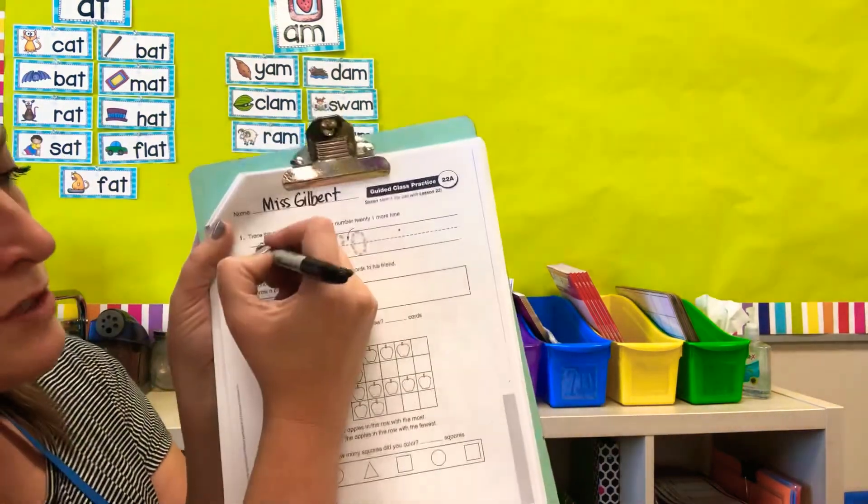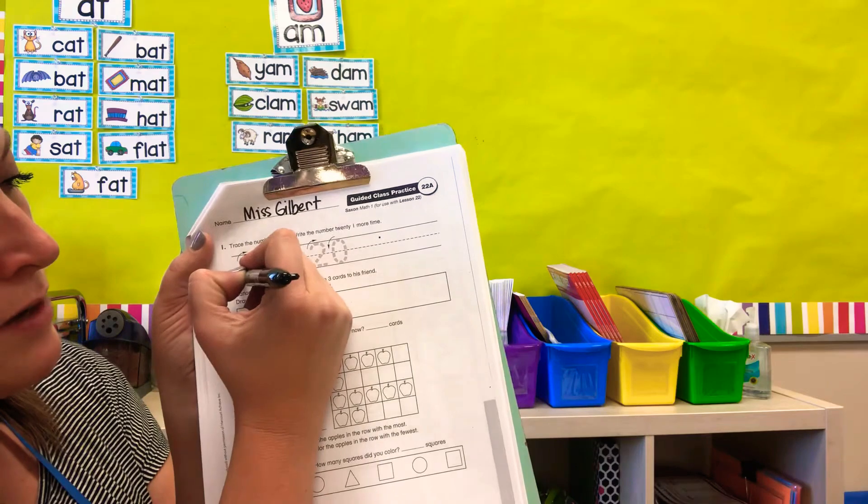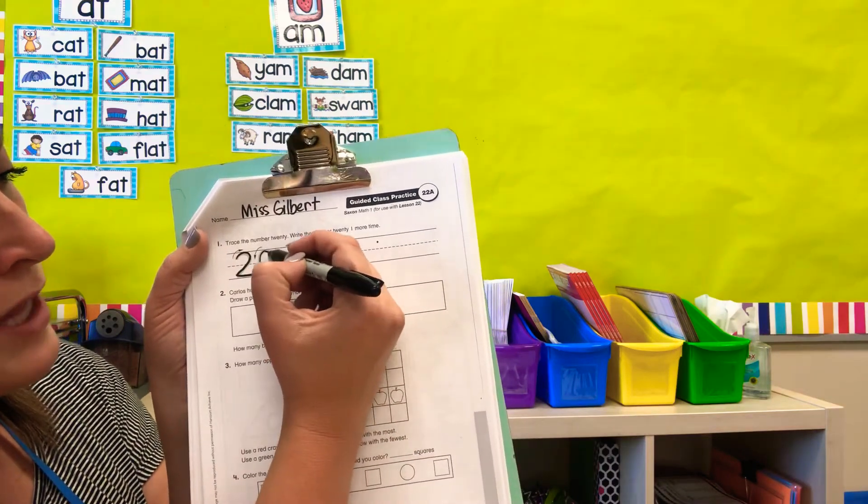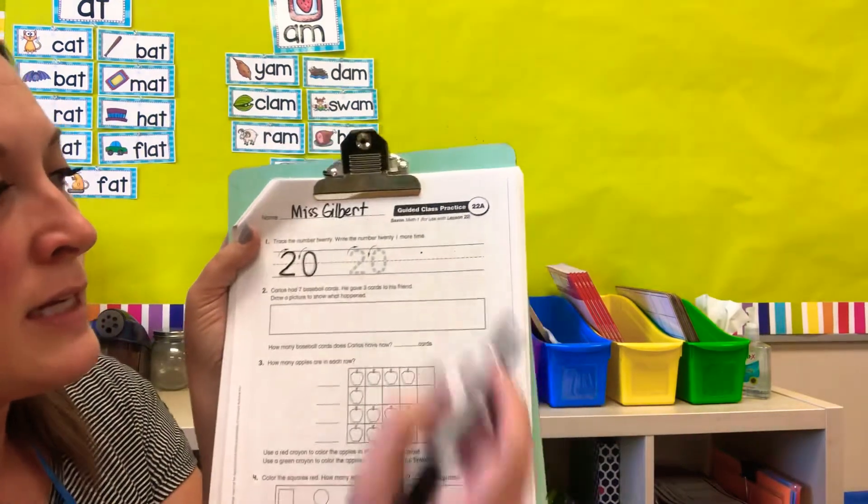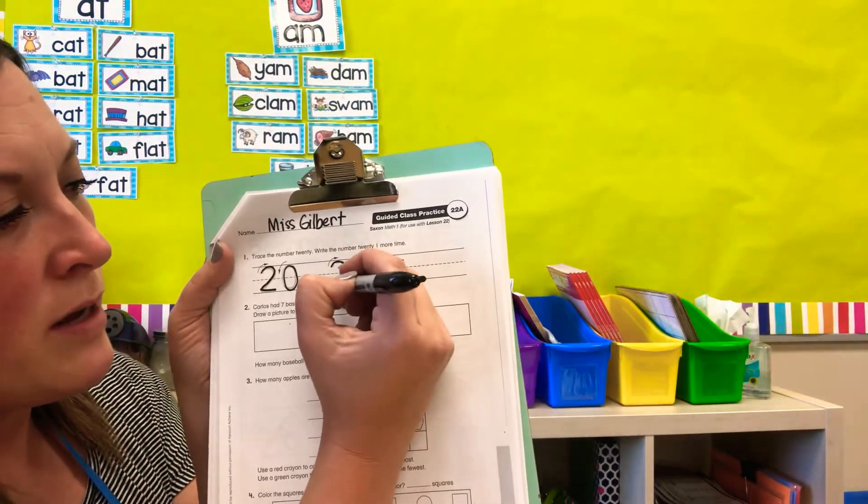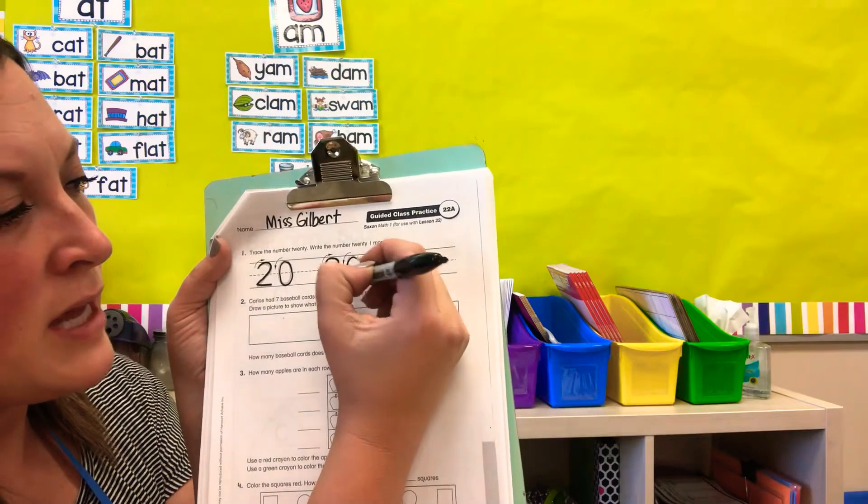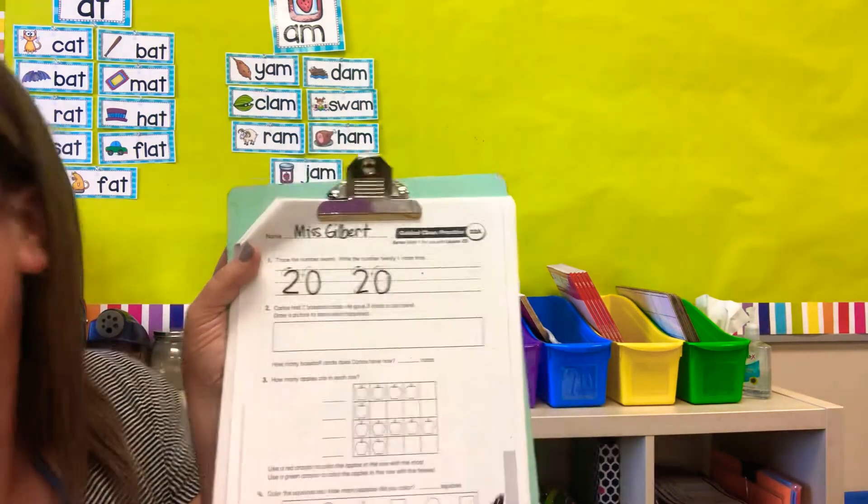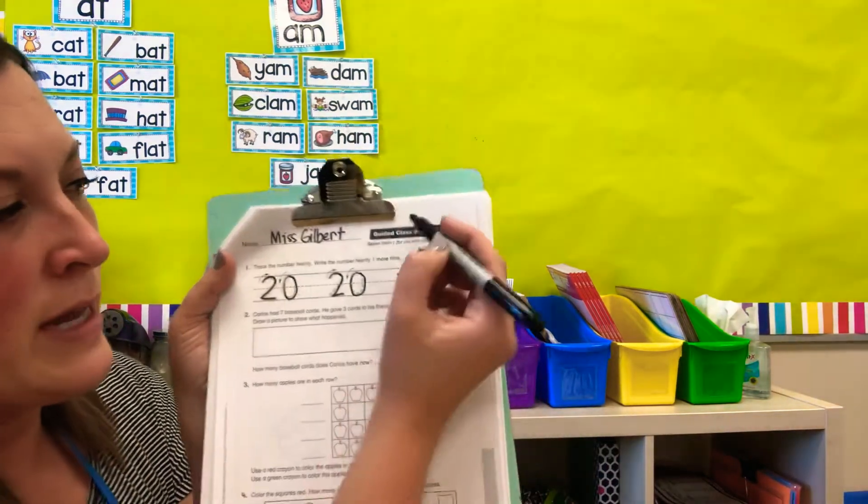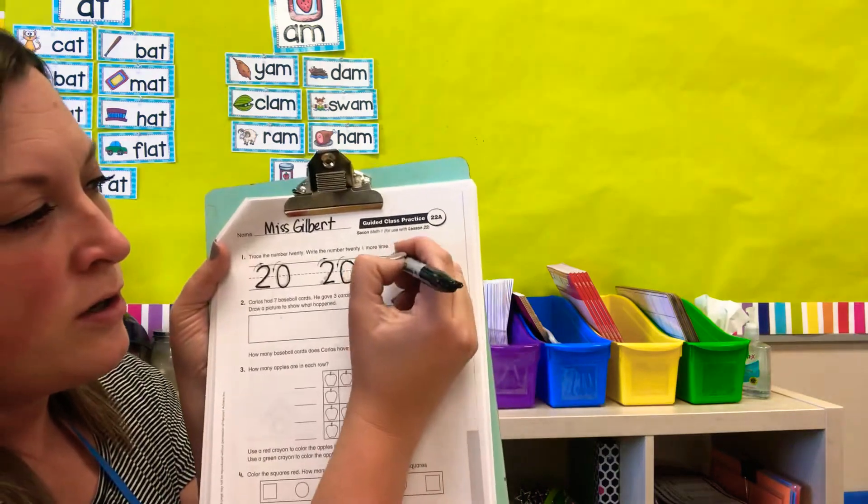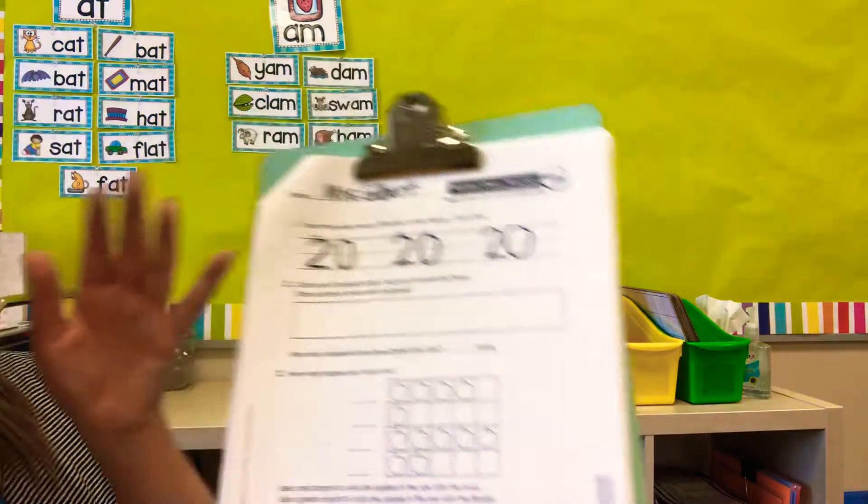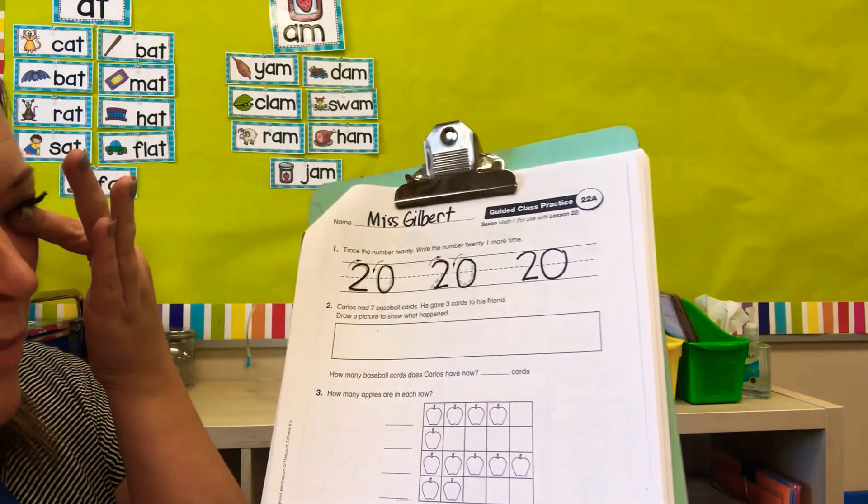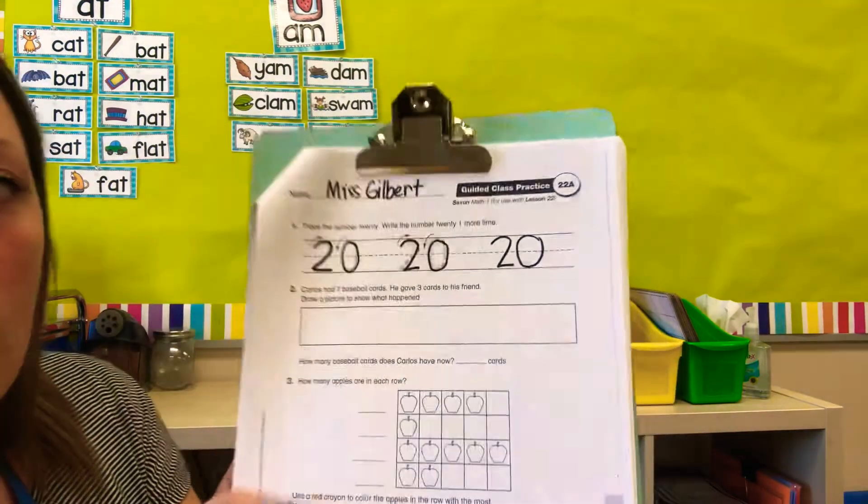Okay, so first we're going to curl around and slide to the right. Make an oval and that is all to make the number 20. Next one. Curl around and slide to the right. Make an oval and that is all to make the number 20. Great work!